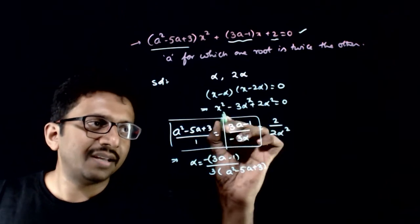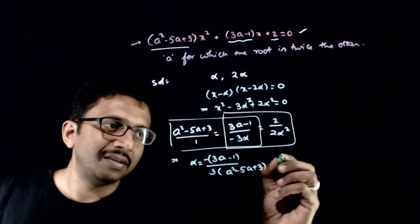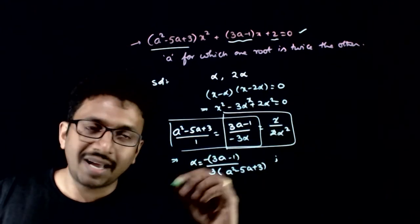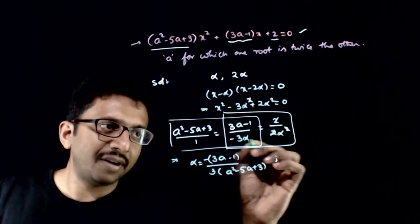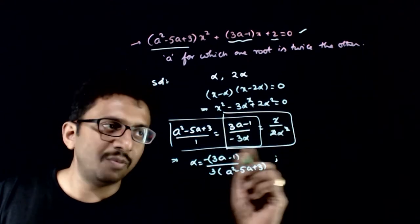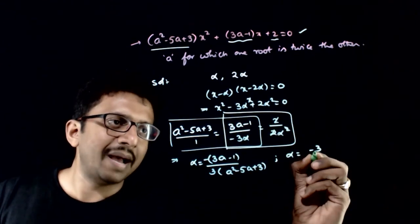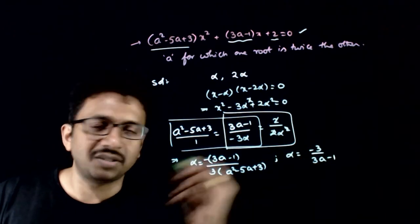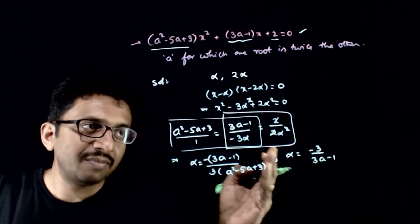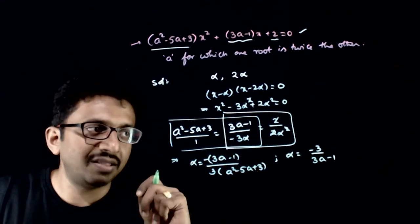And if you equate the next two equations, you get 2 and 2 are getting cancelled, and alpha and alpha are getting cancelled. So (3a - 1)·alpha is equal to -3. Therefore alpha is equal to -3 divided by (3a - 1). From the first equation alpha is this value, and from the second equation alpha is -3/(3a - 1).